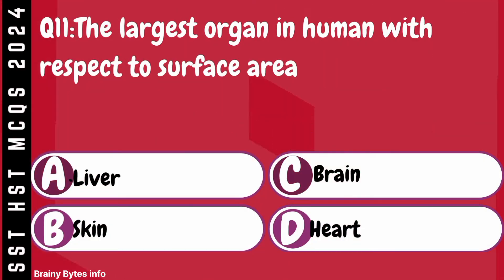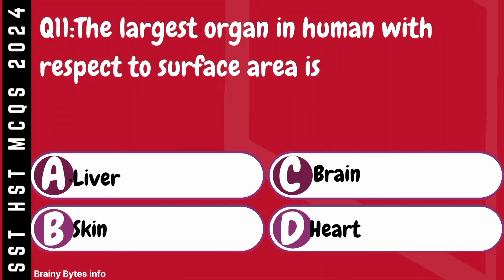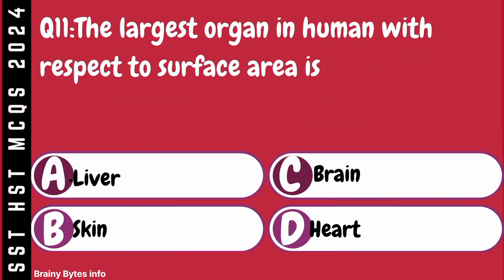Question 11. The largest organ in the human body with respect to surface area is. A. Liver. B. Skin. C. Brain. D. Heart.